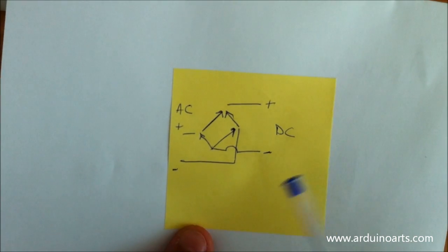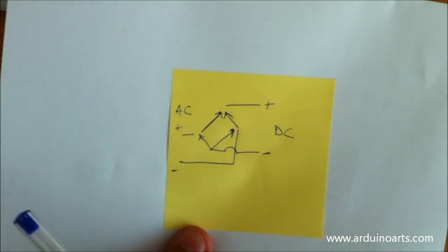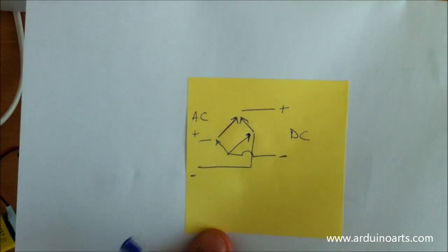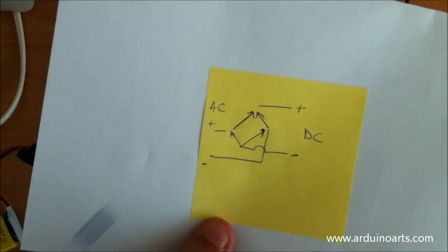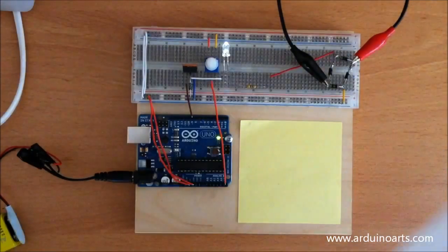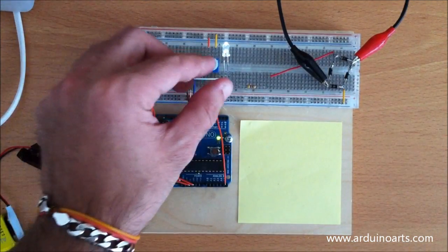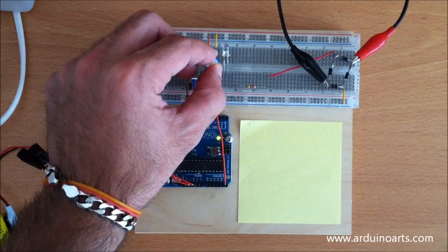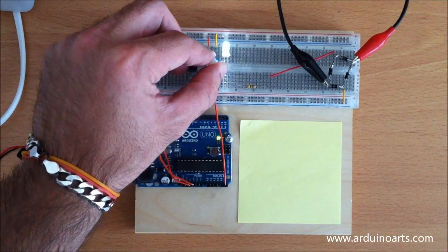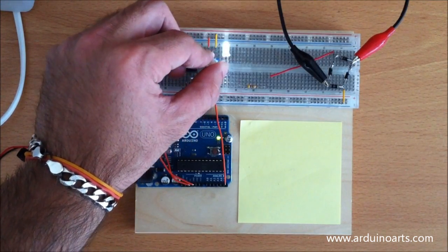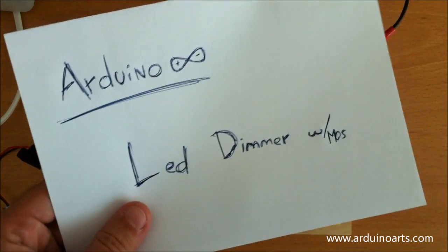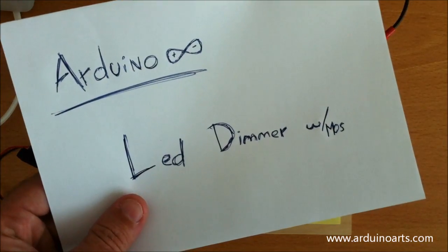We only allow current through when it's positive going one way, and when it's negative going the other way, so we always have a positive and negative DC output. And as you can see, here we have the dimmer with MOS transistor.